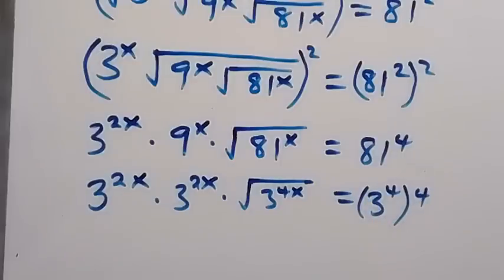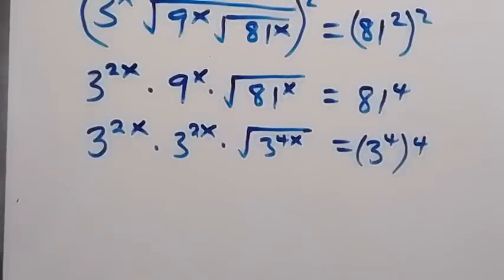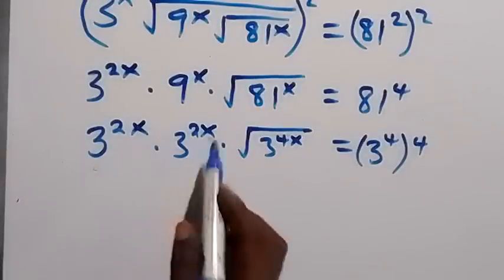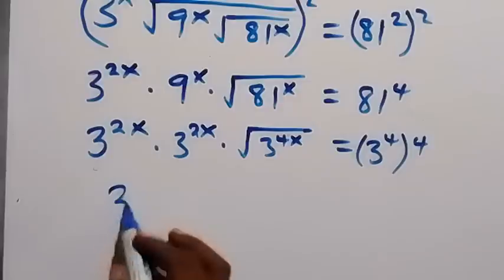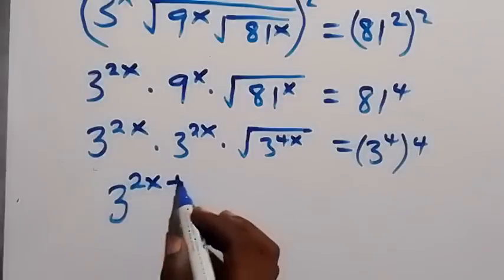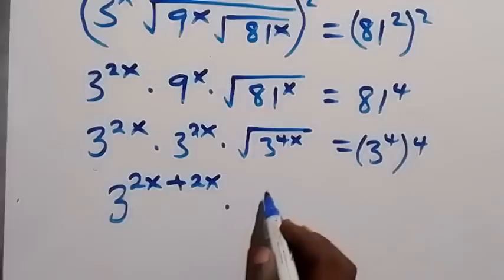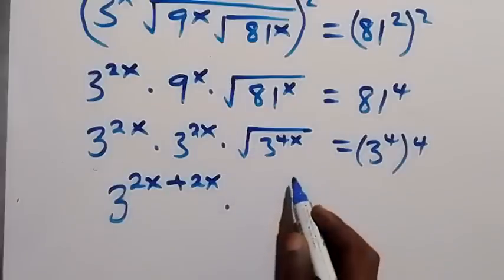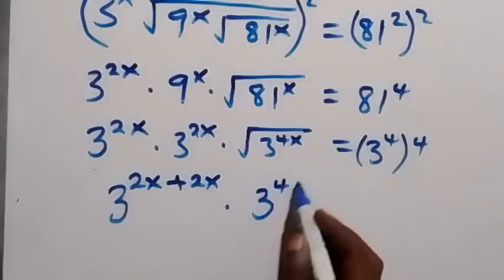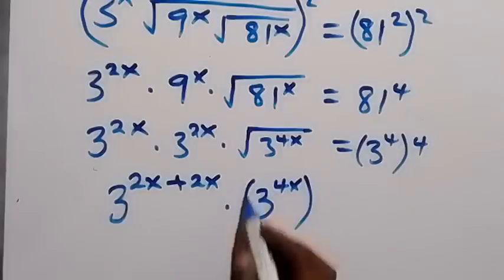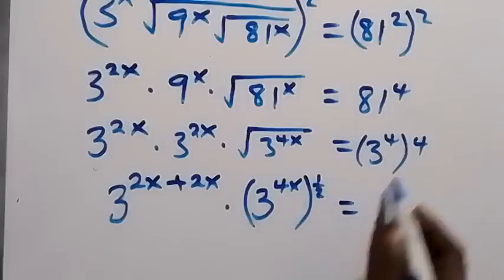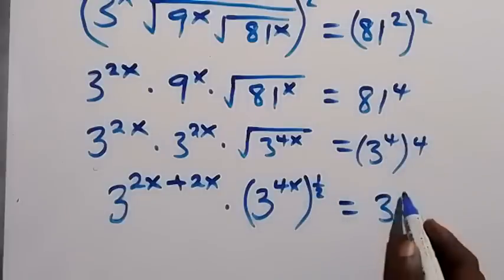Since they have the same base, we add the powers. We have 3 raised to power 2x plus 2x. Then this square root can be written as raised to power one-half, so we have 3 raised to power 4x. On the right side, the powers multiply giving 3 raised to power 16.